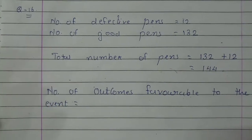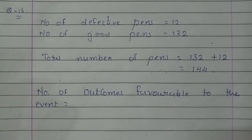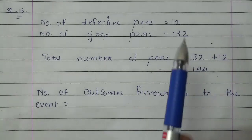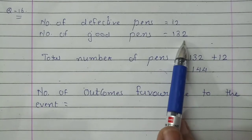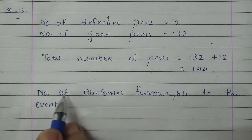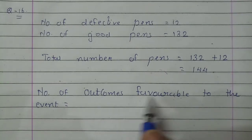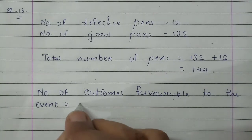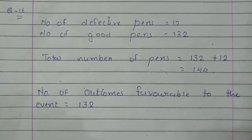We need to find the probability that the pen is a good one. The total number of good pens is 132, so the number of outcomes favorable to this event is 132.